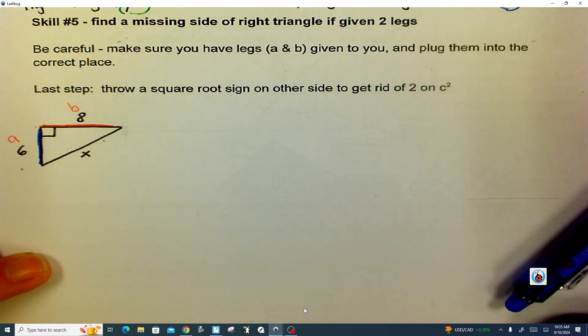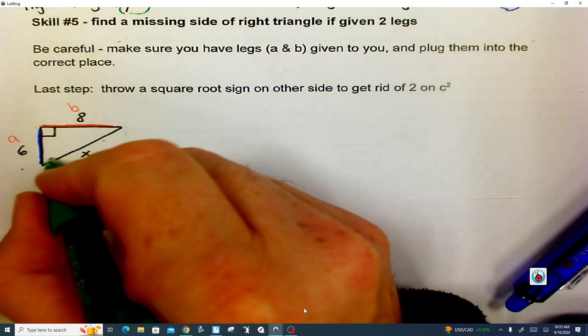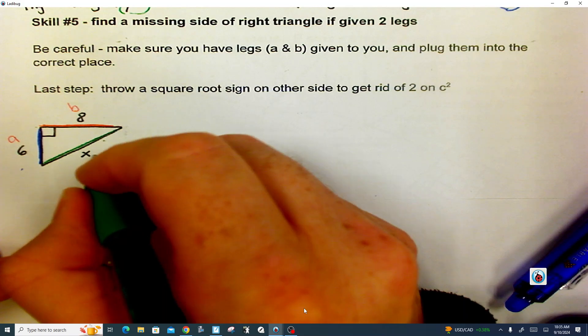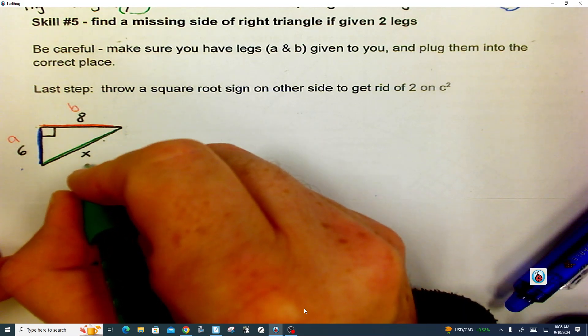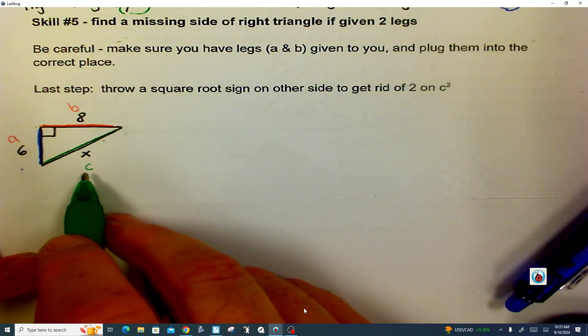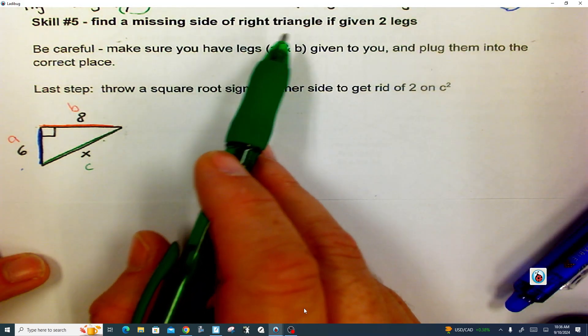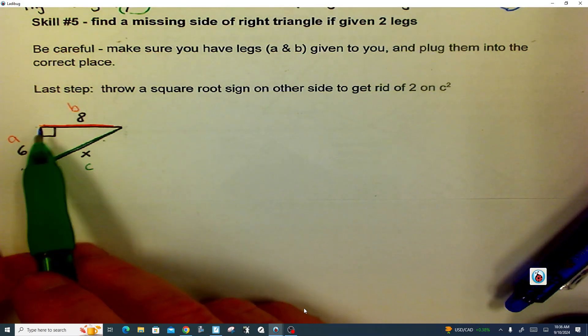Now that means that the side that's not touching it, it's called the hypotenuse or C. And you know, that gets a little bit confusing, but the X is just a way of saying we don't know how long this side is. And we need to find a missing side of right triangle if we're given the two legs, the A and B.